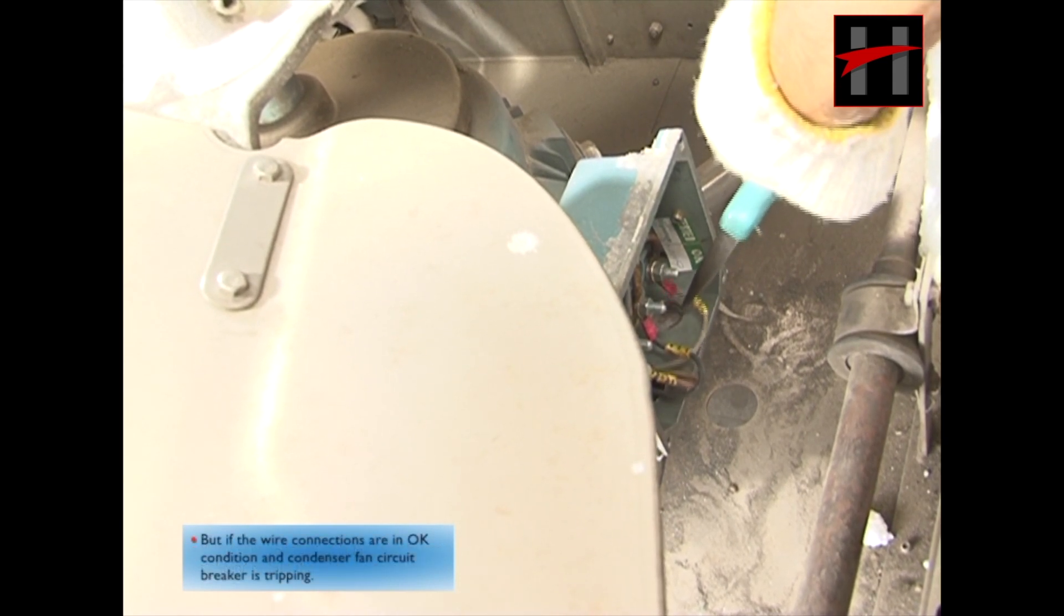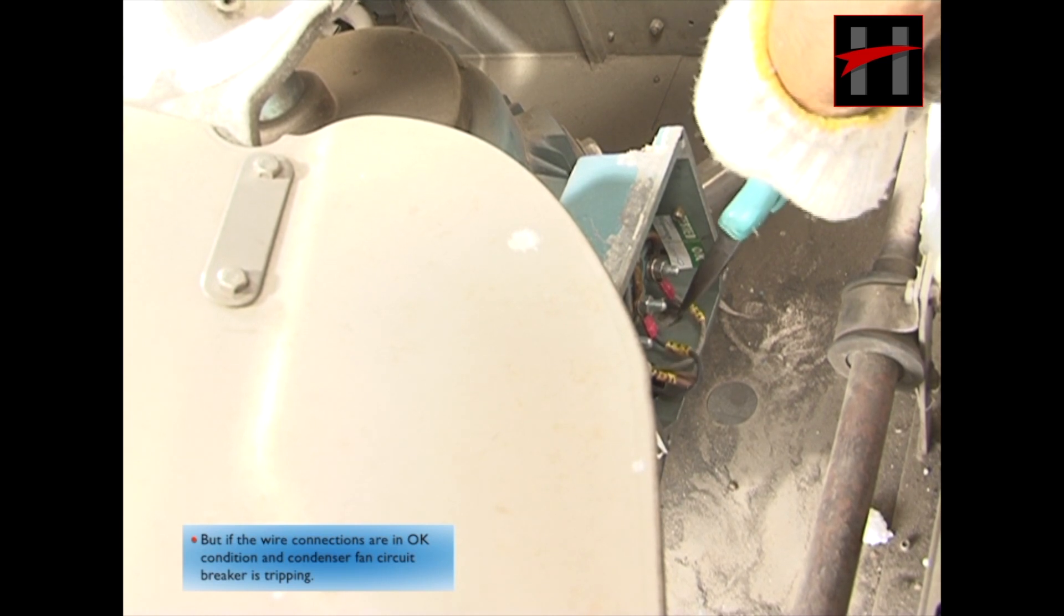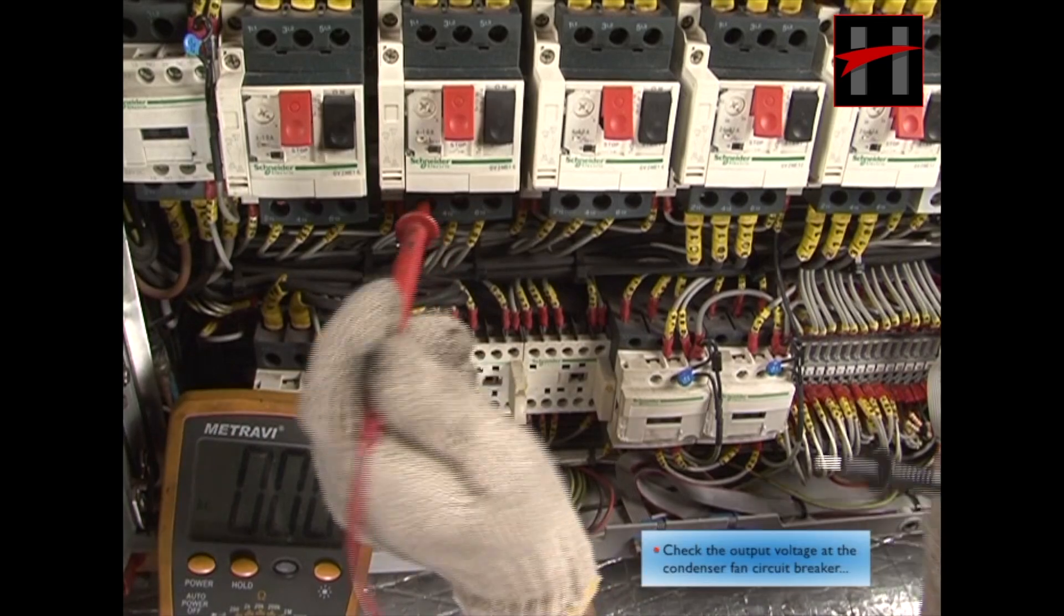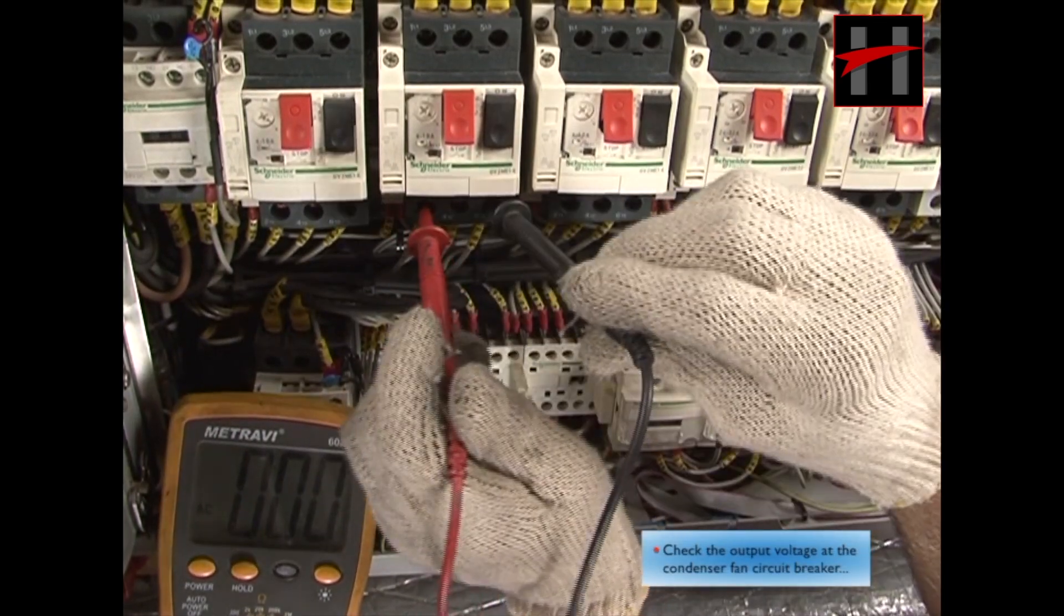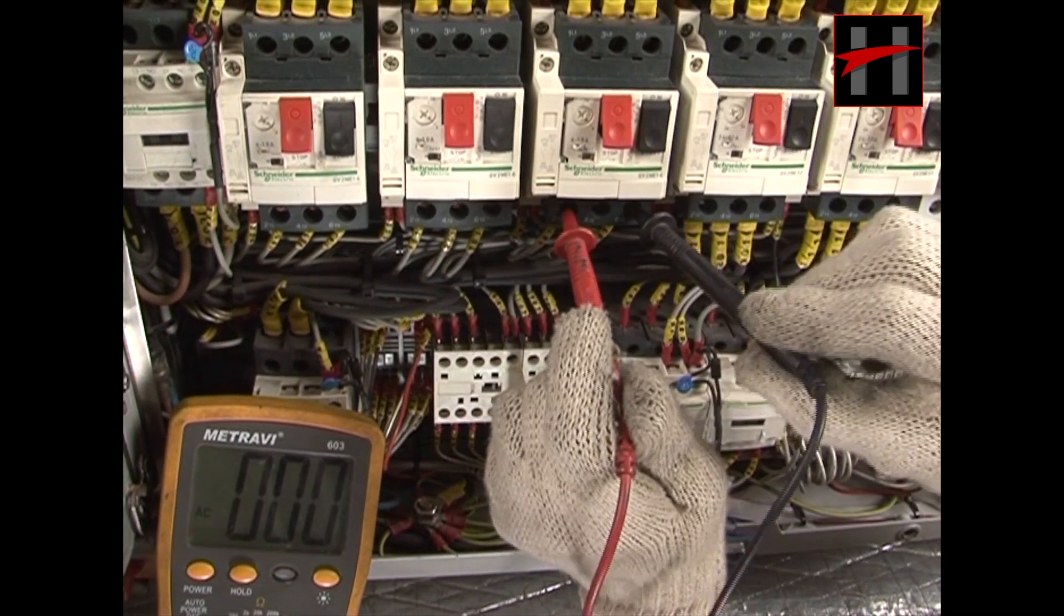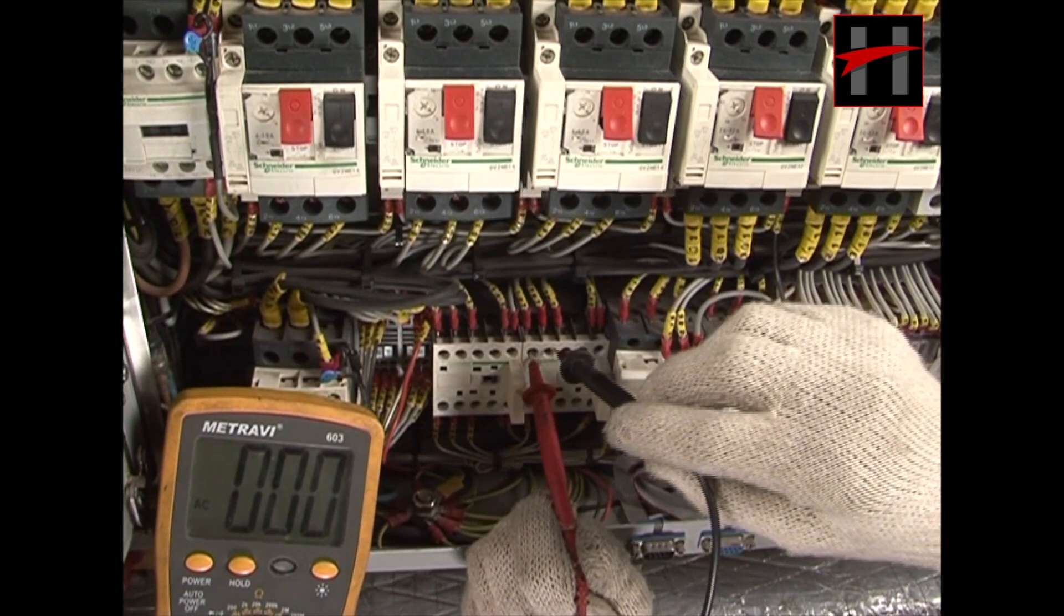But if the wire connections are in okay condition and the condenser fan circuit breaker is tripping, check the output voltage at the condenser fan circuit breaker and the circuit breaker contactor.